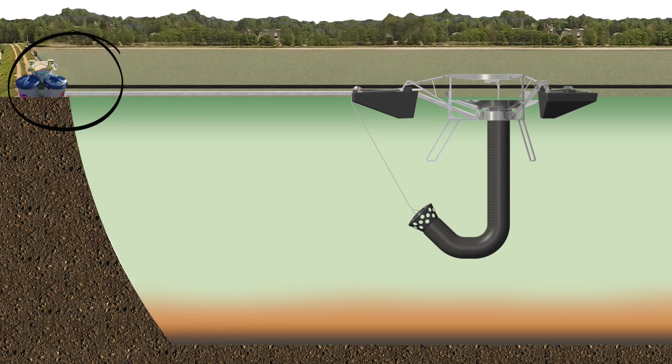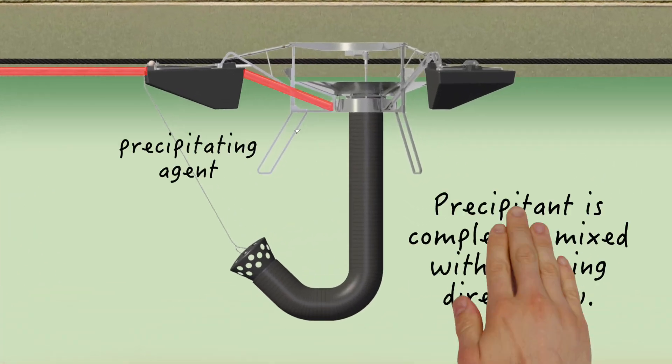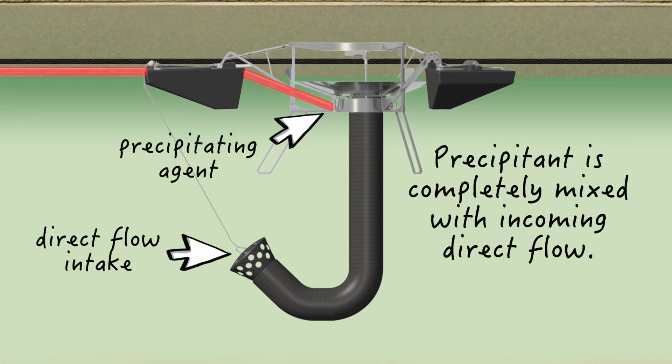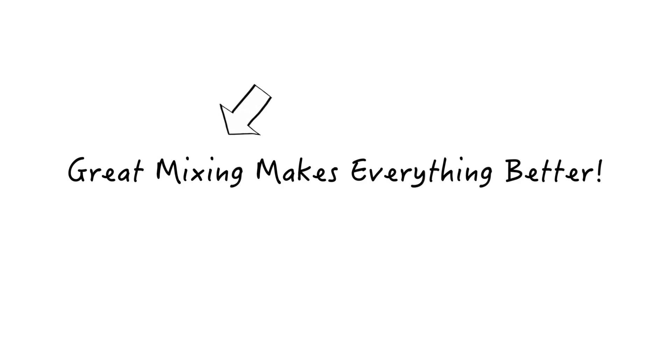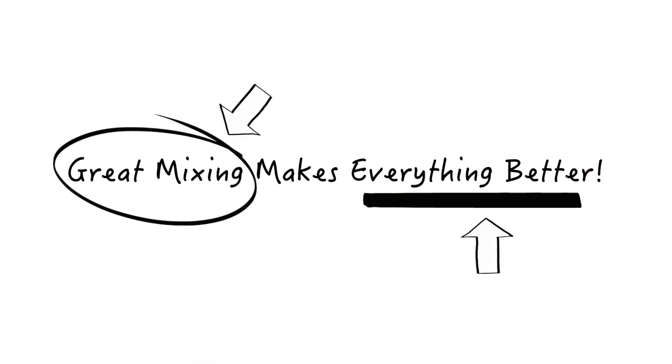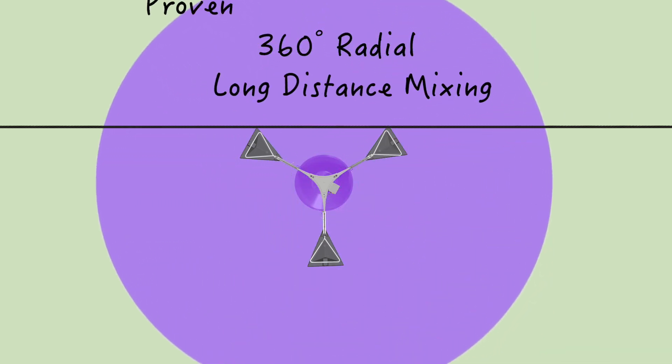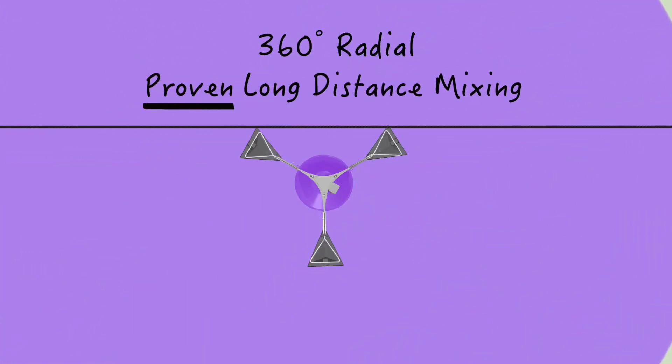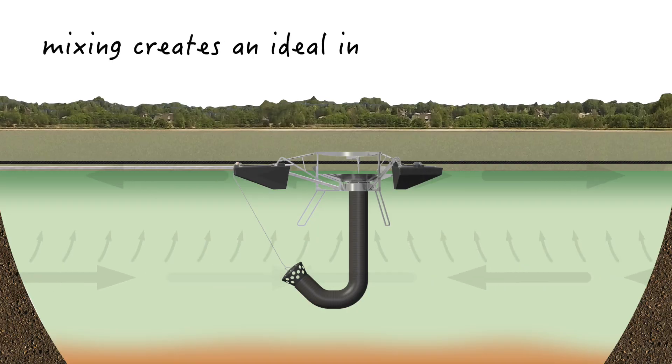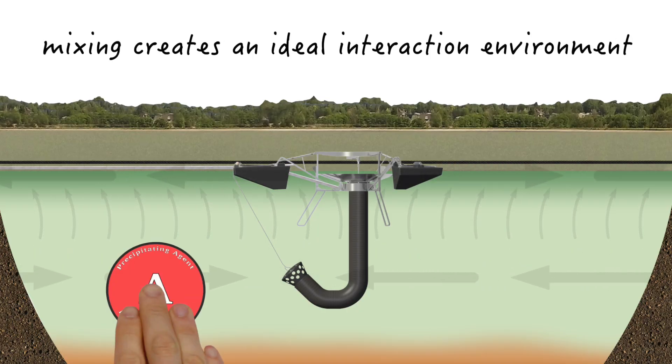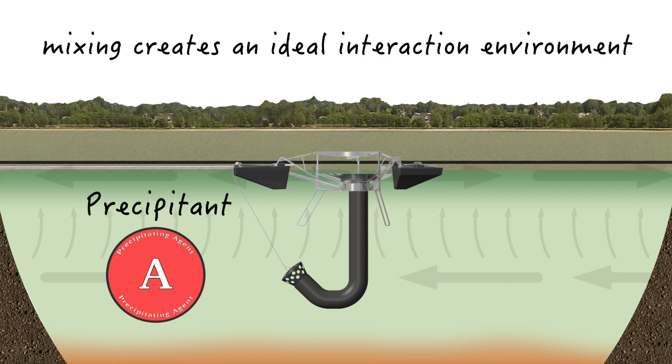The phosphorus precipitating agent is sent from the onshore metering system down the injection hose to the machine just below the impeller. Here, the precipitating agent is fully mixed into the entire direct flow of the floating wastewater mixer. And this is where great mixing takes center stage. The well-mixed precipitant is then distributed radially across the lagoon, utilizing proven long-distance circulation technology. It creates an ideal interaction environment between your precipitating agent and the target phosphorus.